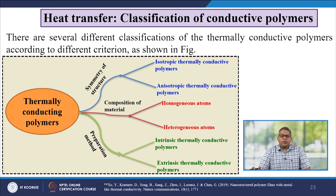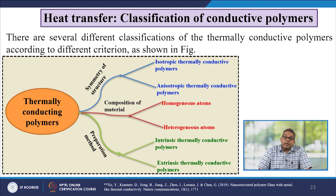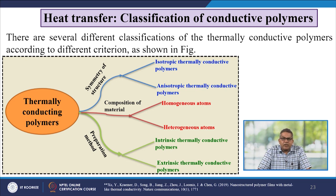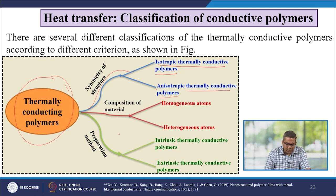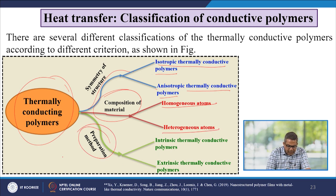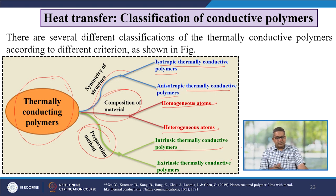The classification of conductive polymers: according to symmetry of structure, they are subdivided into isotropic or anisotropic thermally conductive polymers. According to composition, they are homogeneous or heterogeneous matter. Based on preparation method, they can be classified as intrinsic thermally conductive polymers or extrinsic thermally conductive polymers.